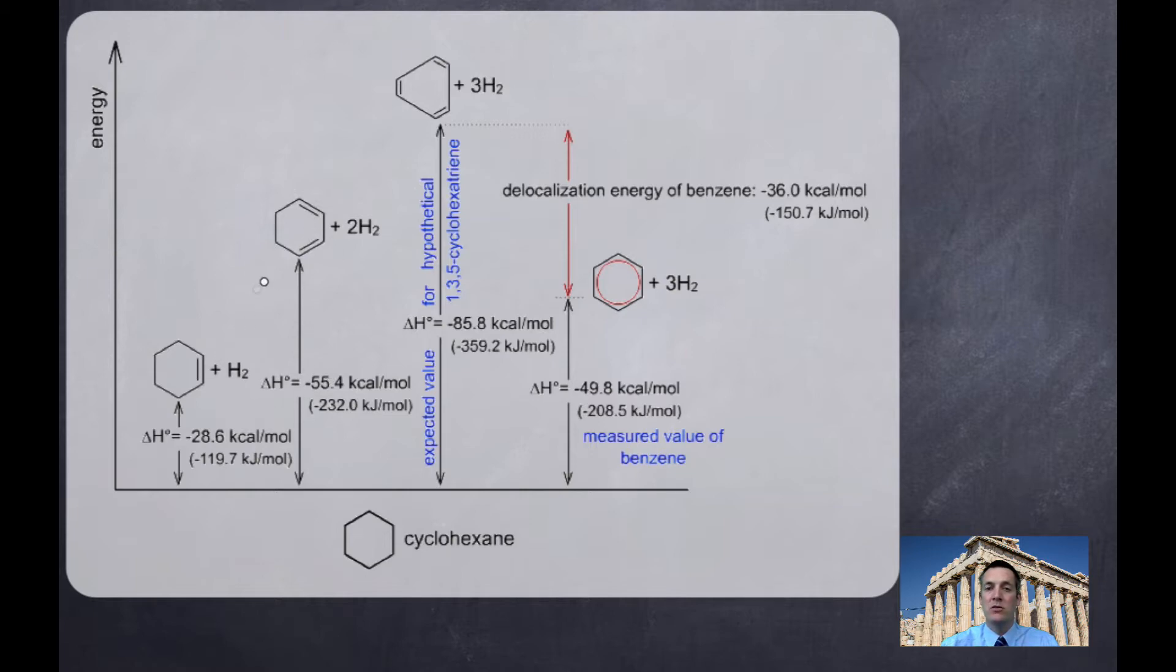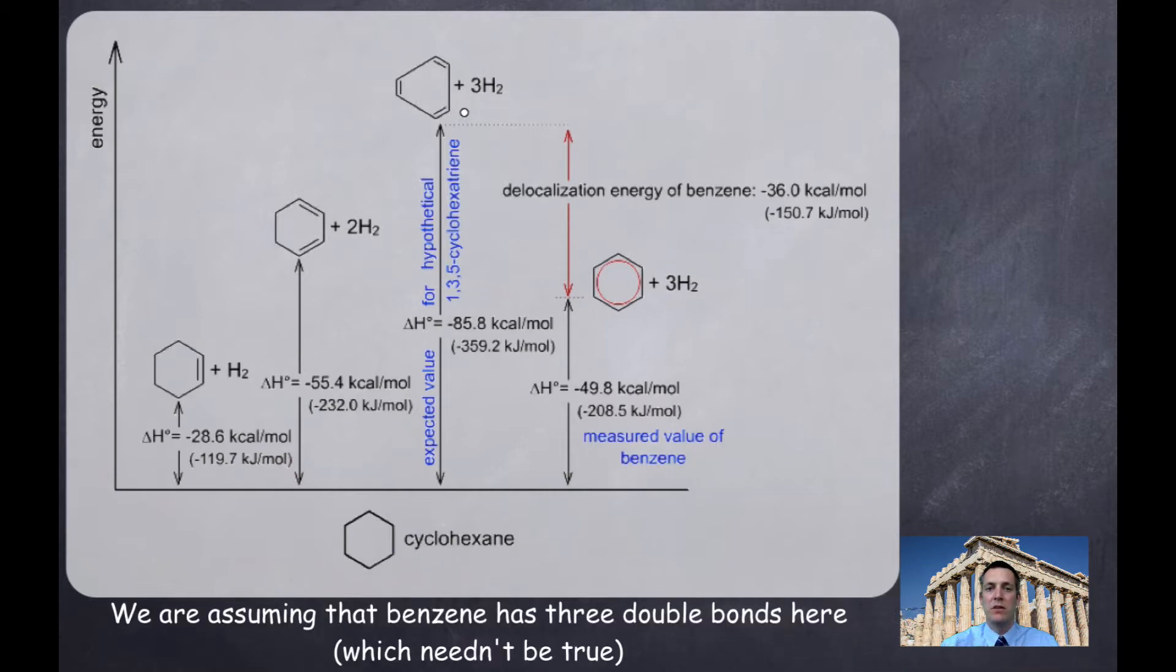And based on that sort of pattern that's unfolding here, we might think, well, in that case, what if we took benzene, with its three double bonds, and added three hydrogens to it? Well, we'd expect there to be about three times this enthalpy change. So, this line here is what we would expect if the molecule had three single and three double bonds. Right? If it was acting like one of these, but it just had an extra double bond in it.